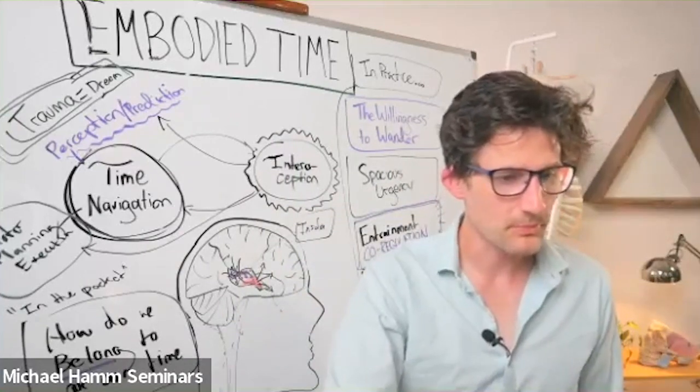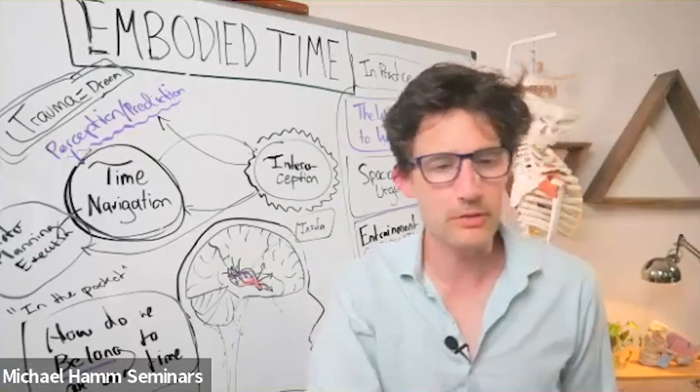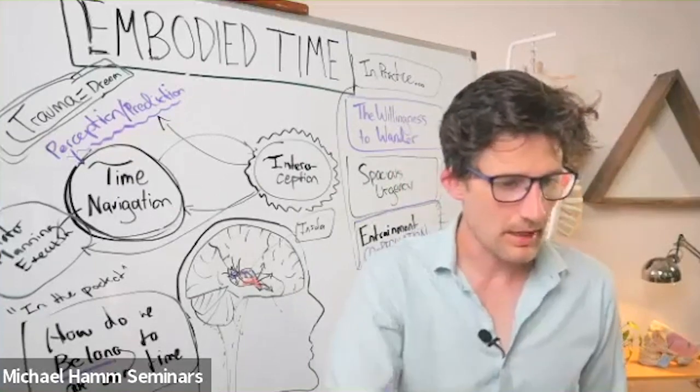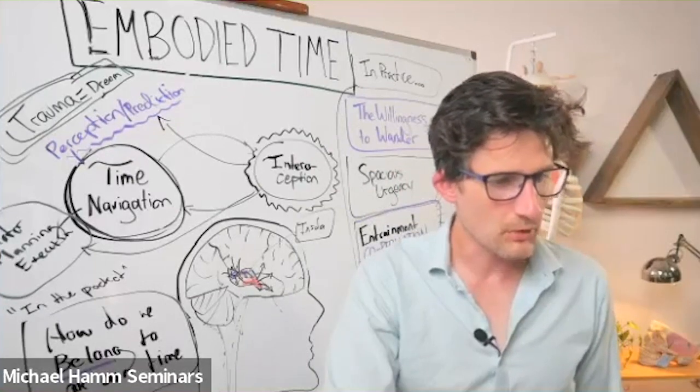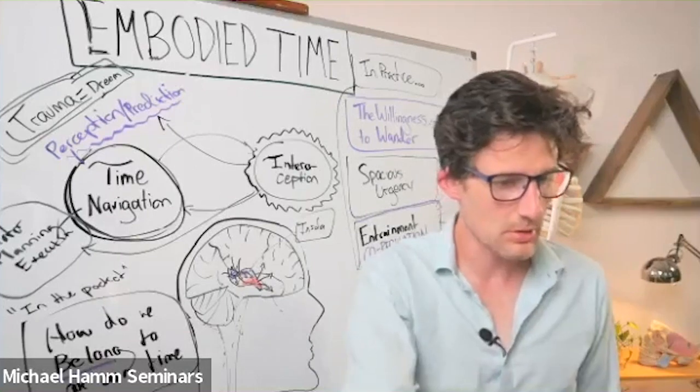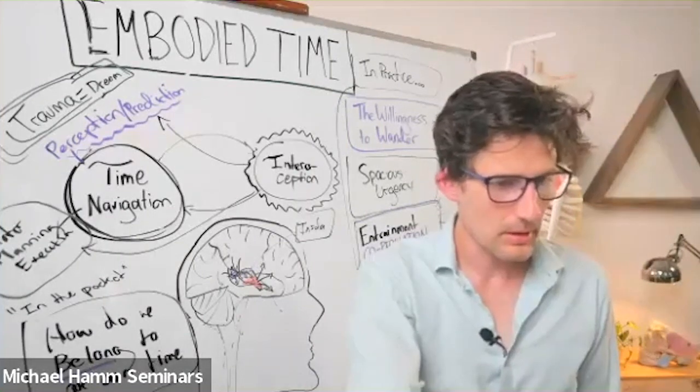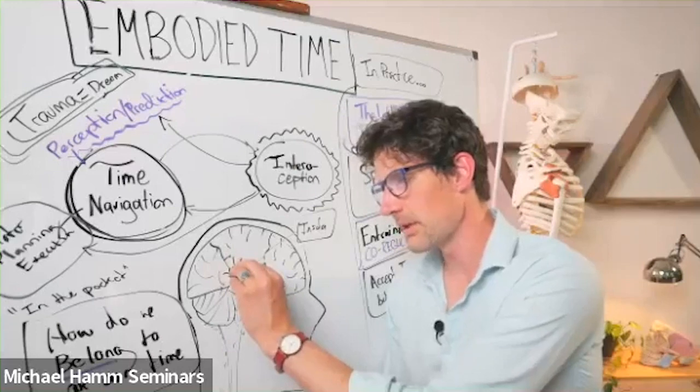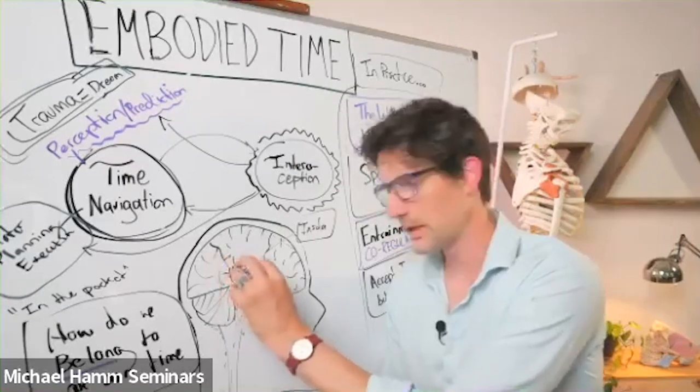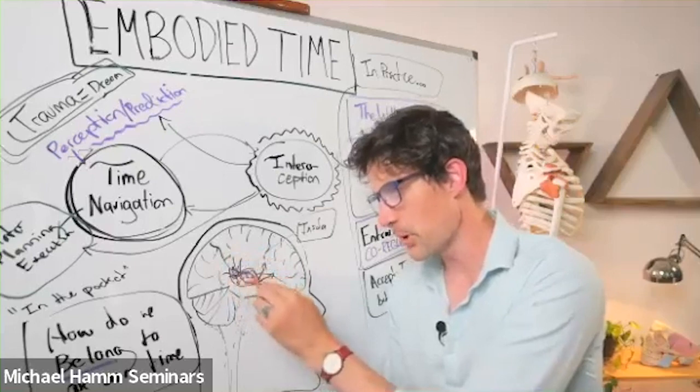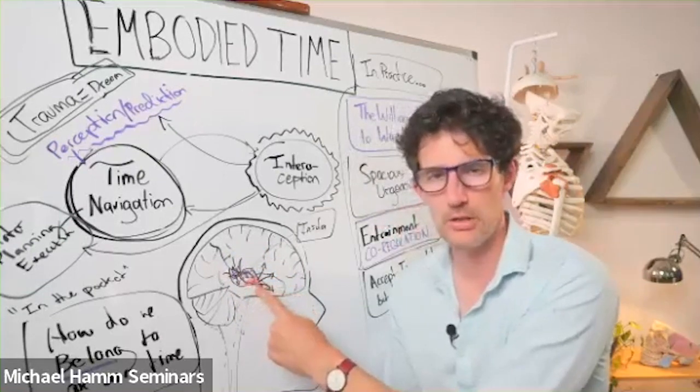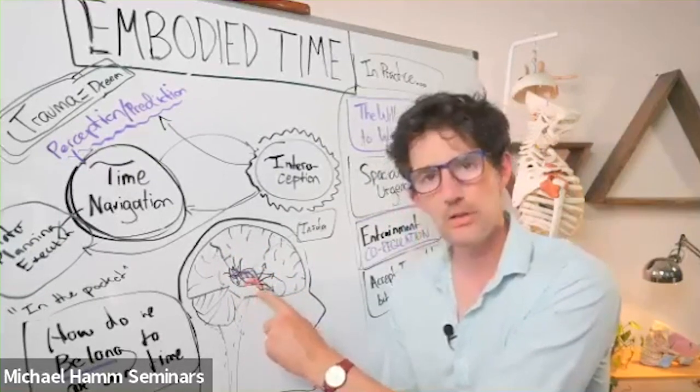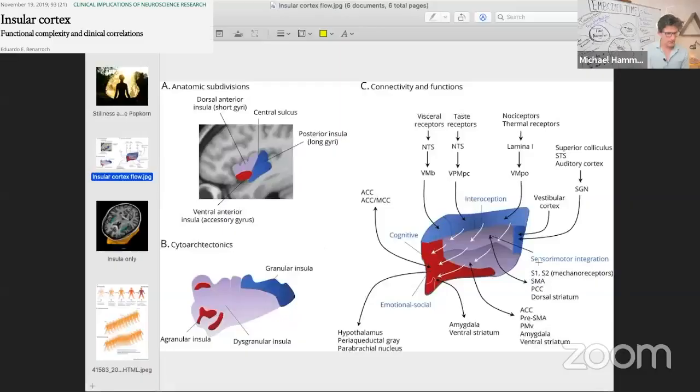When it comes to the insula, it turns out that there's a flow of information that runs from posterior to anterior, going from processing the non-personal to increasingly personalizing the information by the time you get to the anterior.